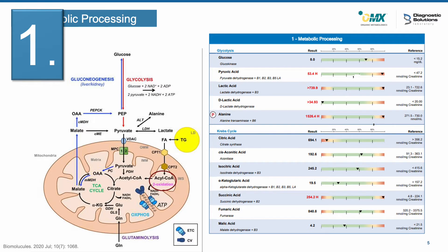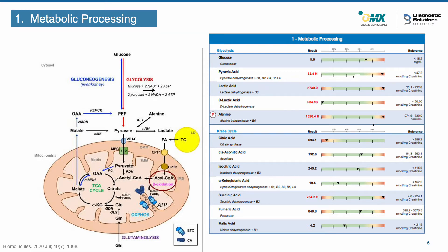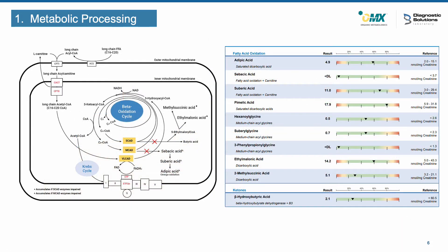Section 1 looks at metabolic processing — it looks at markers associated with glycolysis and fatty acid oxidation, both of which flow into the Krebs cycle. Fatty acid oxidation markers look at several groupings of markers that are associated with impairments to beta oxidation, including impairments to short and medium chain acyl dehydrogenase enzymes.